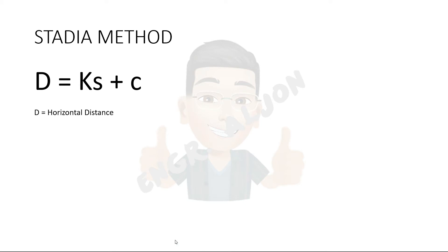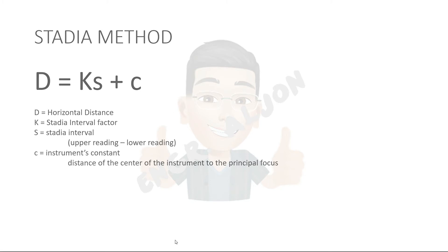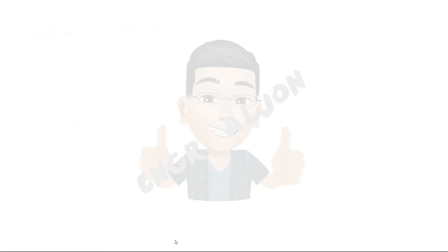Where D is the horizontal distance, K is the stadia interval factor, S is the stadia interval, which is the difference of the upper reading and the lower reading. C is the offset of the focus to the center of the instrument, or is commonly known as the instrument's constant. K and C are given most of the time, and its common values are 100 and 0 respectively.